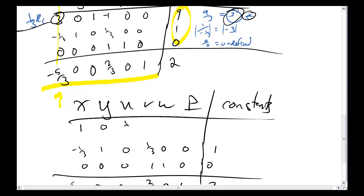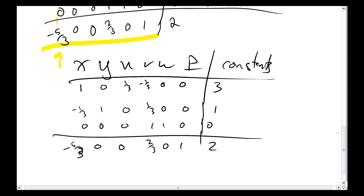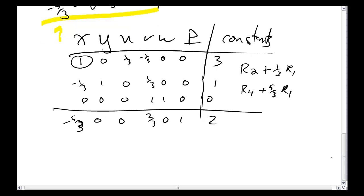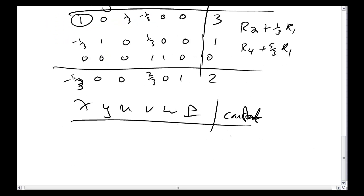Now I'm pivoting around this element right here, so I need to do row 2 plus 1 third row 1, and I need to do row 4 plus 5 thirds row 1. And this row already is just fine as it is. So I've got x, y, u, v, w, and p, and my constants. And my top row 1, 0, 1 third, negative 1 third, 0, 0, 3.